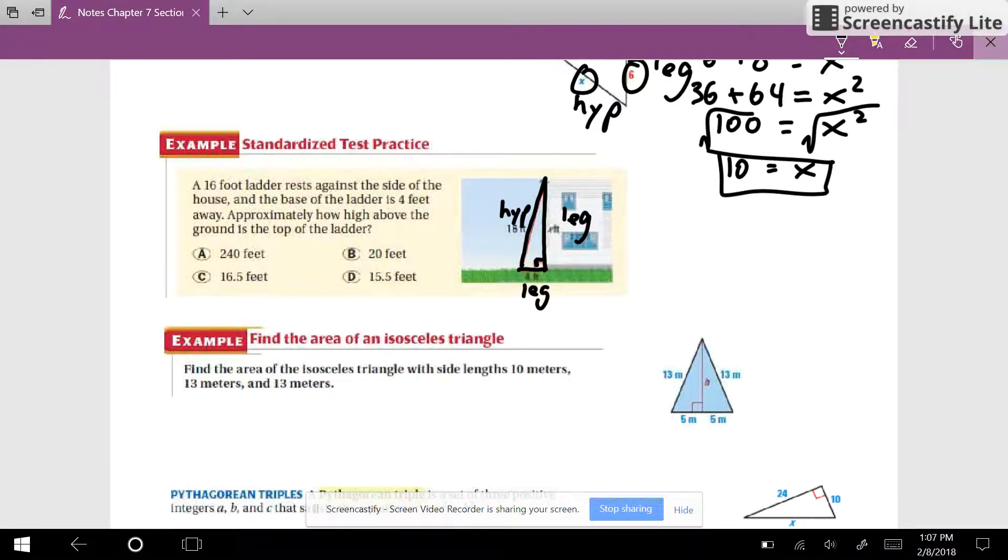So the legs are the A and the B. So one of them, I don't know, we call that x squared. The other one's 4, and then your hypotenuse is 16. So let's do a little simplifying here. And we're going to subtract 16 from both sides. So now we've got the square root of 240.